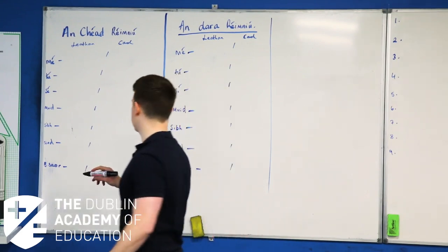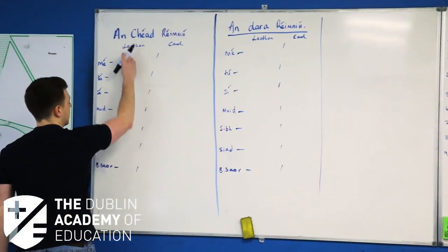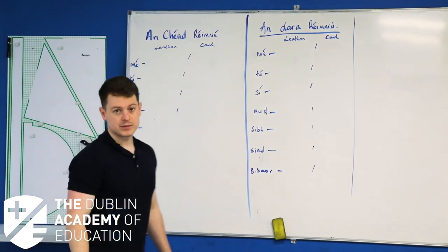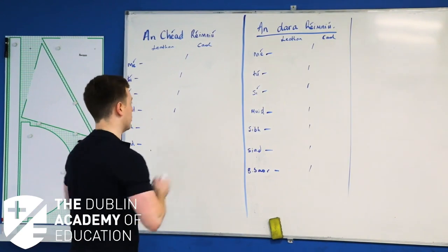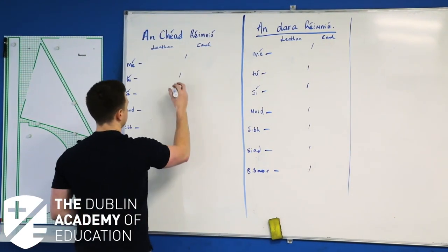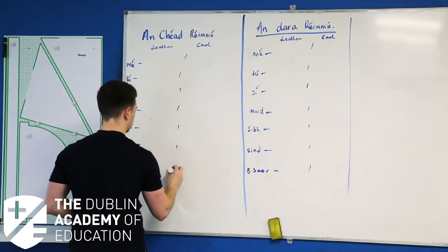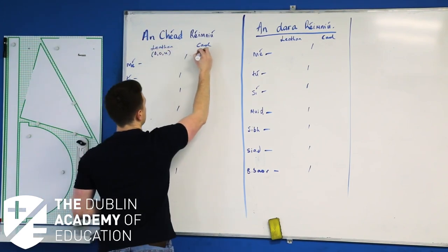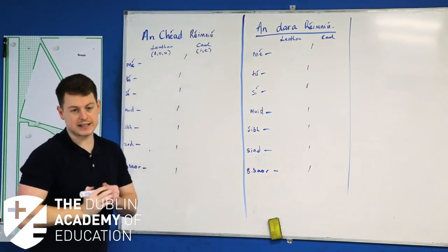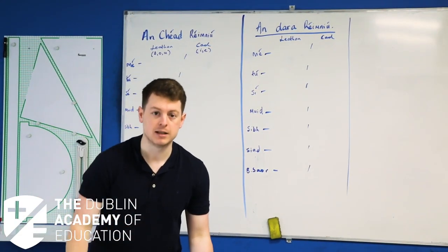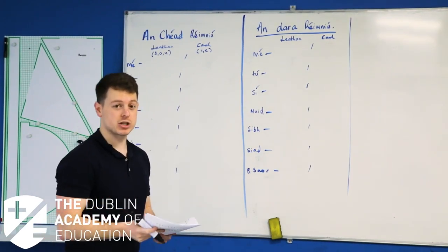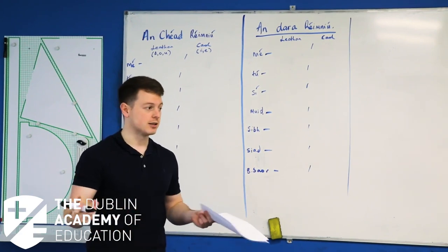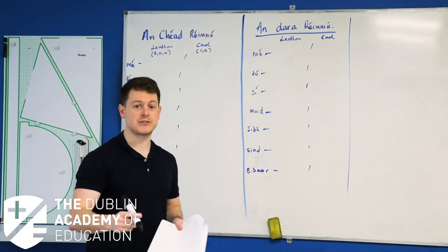I'm going to put the endings up here for anyone who doesn't know them. We've got verbs that are leathan and verbs that are caol. What's the difference? When they're leathan, the last vowel in them is A, O or U. And when they're caol it's I and E. Leathan: A, O and U. Caol is I and E. So you check the last vowel in a verb — leathan or caol. I'm going at this quite fast because this is revision rather than seeing it for the first time. If you're only seeing the present tense for the first time at the end of third year, there's been a serious screw-up. So you're definitely just doing a bit of revision here.